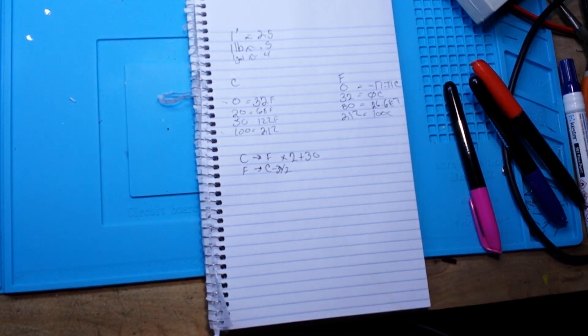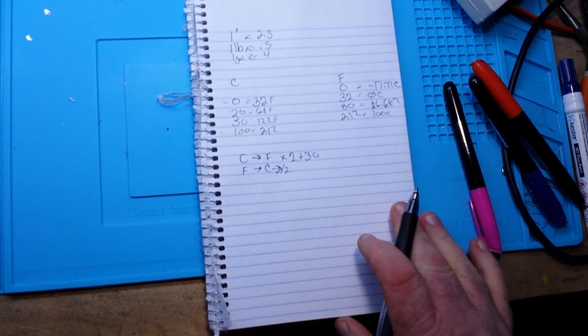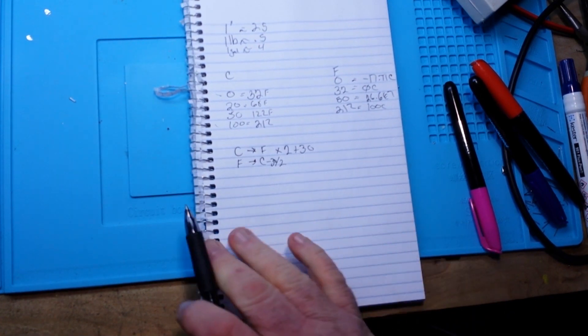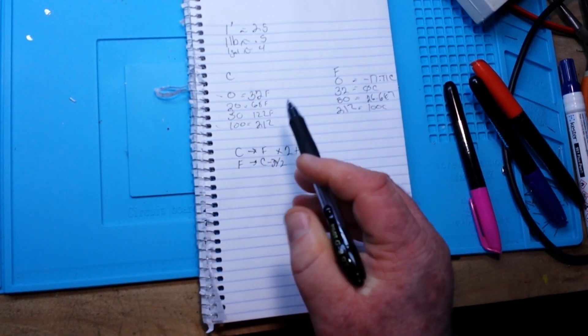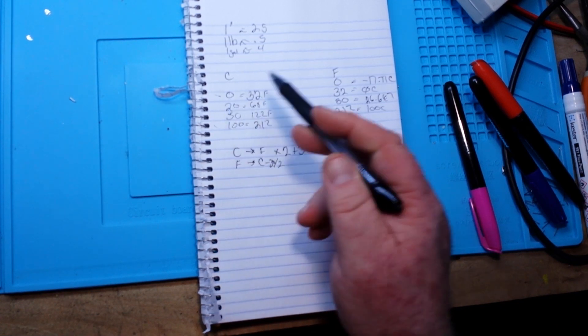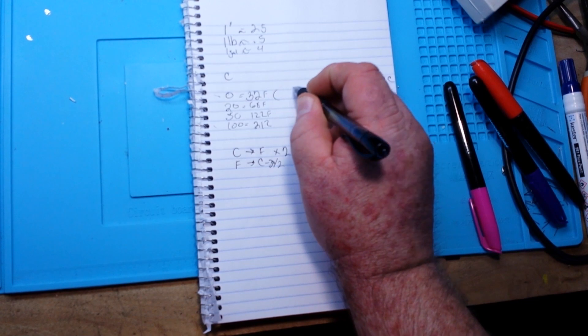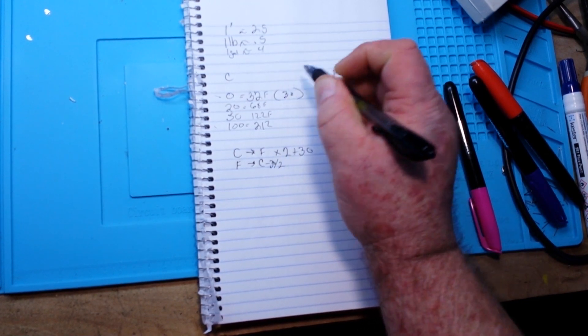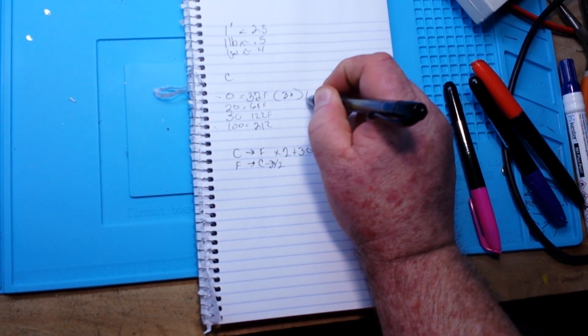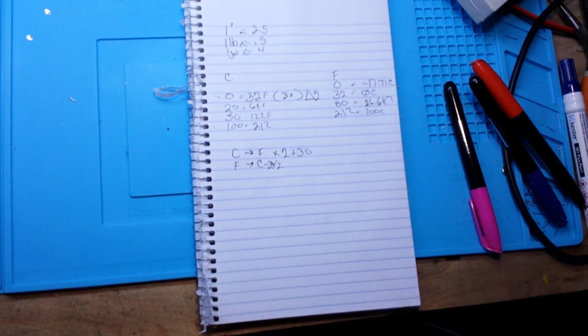So Celsius to Fahrenheit, if we were to take zero times 2 is still zero and add 30, our approximate measurement is 30 degrees and you see we have a difference of 2 degrees.